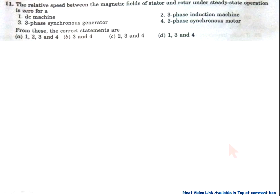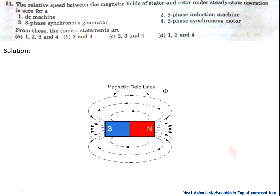Now, question number 11: The relative speed between the magnetic field of stator and rotor under steady state operation is zero — for (A) a DC machine, (B) 3-phase induction machine, (C) 3-phase synchronous generator, (D) 3-phase synchronous motor. Before going to solve this problem, we have to study the magnetic lines flow in a magnet. Inside the magnet, magnetic lines flow from S to N, but outside the magnet, magnetic lines flow from N to S.